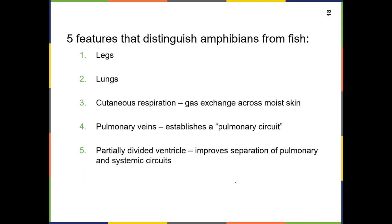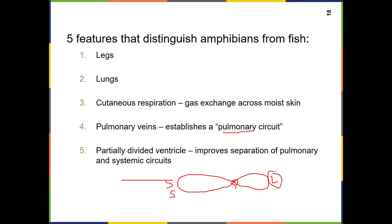You can think of it like a figure eight where the heart is at the intersection. Blood goes from the heart to the lungs and back to the heart — that's the pulmonary circuit. Then from the heart out to the body, which we call the systemic circuit, and back to the heart. It keeps alternating: heart, lungs, heart, systemic. Amphibians also have a three-chambered heart with a partially divided ventricle.